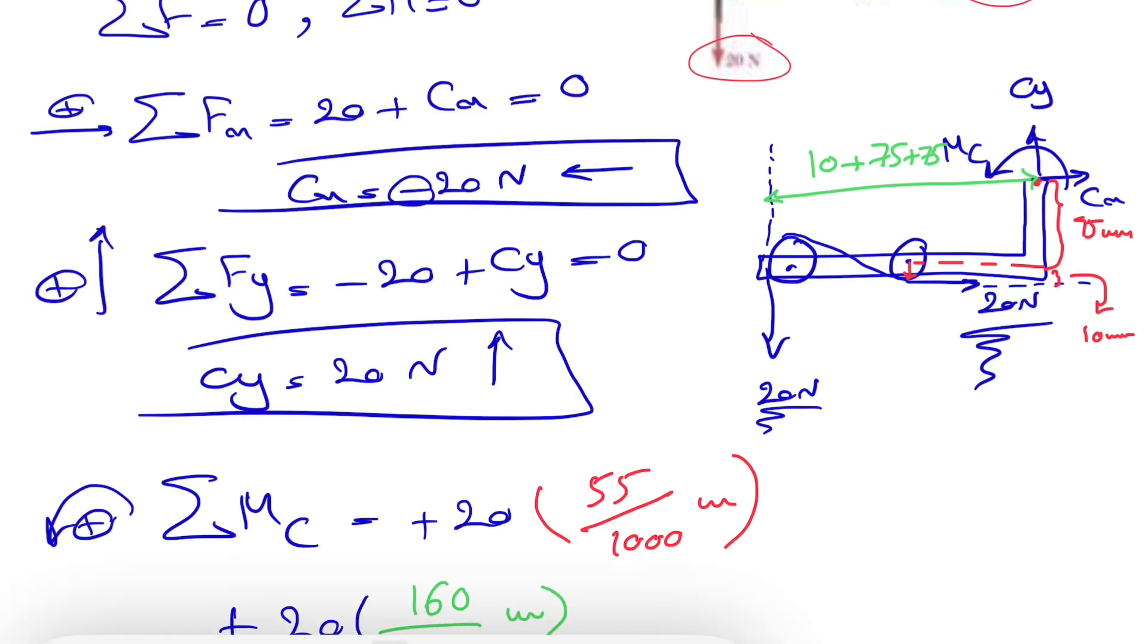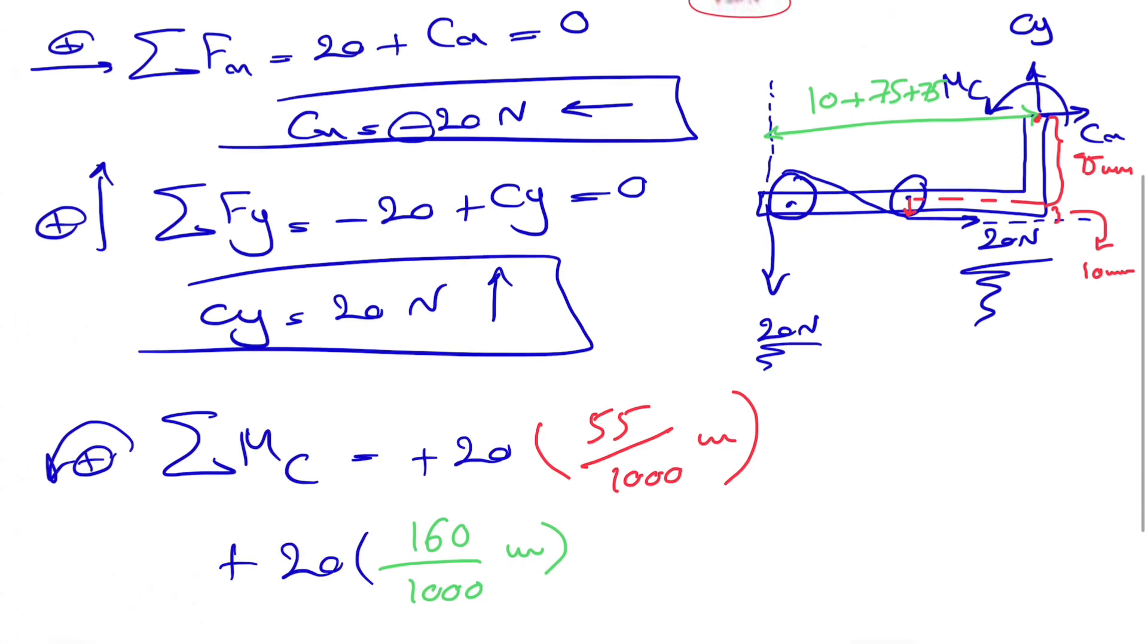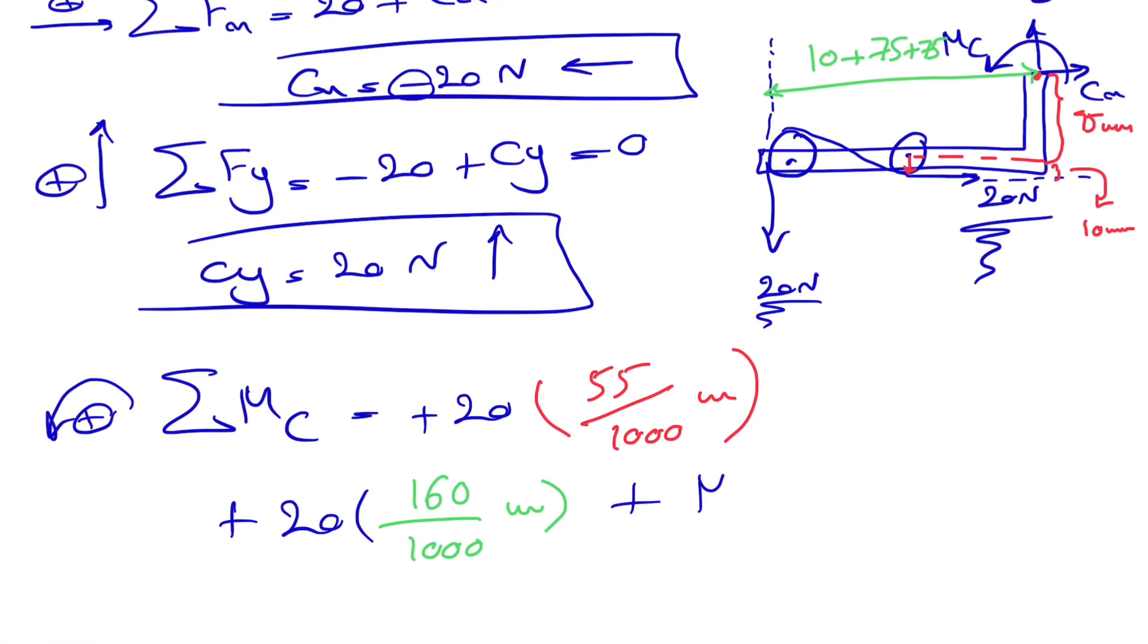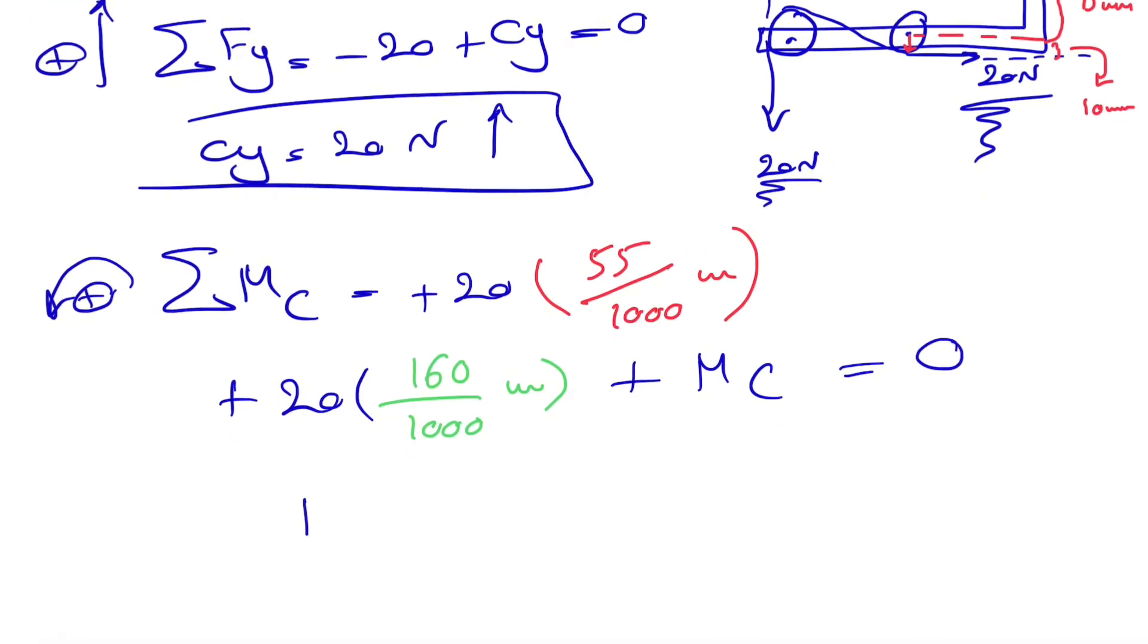The last moment that we have is the moment MC, which is another reaction at point C equals zero. Positive sign since we assume that the moment is counterclockwise. If we find MC, we'll get minus 4.3 Newton meters. That shows that the correct direction was clockwise, and our assumption wasn't right.